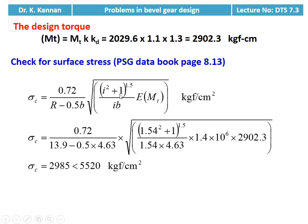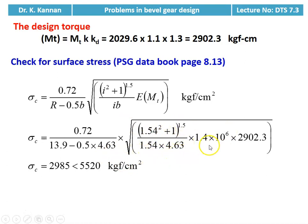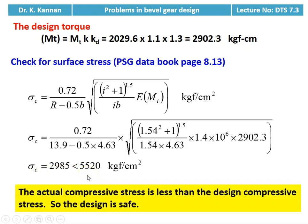Now we check for surface stress using the equation on page 8.13: sigma_C = 0.72 / (R − 0.5b) × √[(i² + 1)^1.5 / (i × b × E × MT(design))]. Substituting: 0.72 / (13.9 − 0.5 × 4.63) × √[(1.54² + 1)^1.5 / (1.54 × 4.63 × 1.4 × 10⁶ × 2902.3)]. The actual surface stress is 2985 kgf/cm², which is less than 5520 kgf/cm². The actual compressive stress is less than the design compressive stress, so the design is safe.